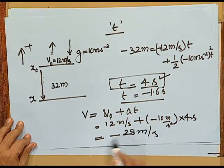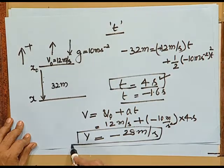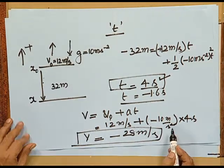The result v = −28 m/s makes sense: the initial velocity was positive (upward), and when the object reaches the ground the velocity is in the downward direction, hence negative.